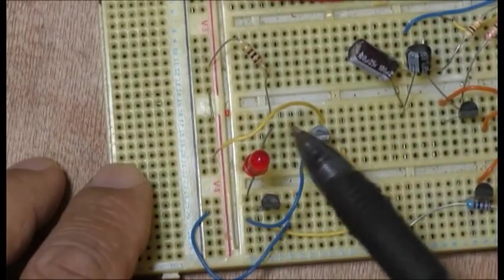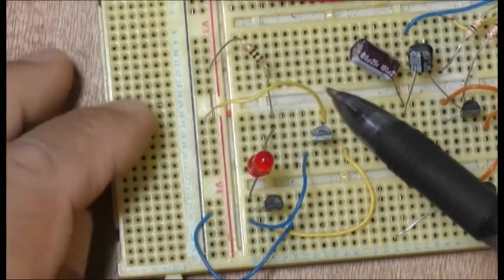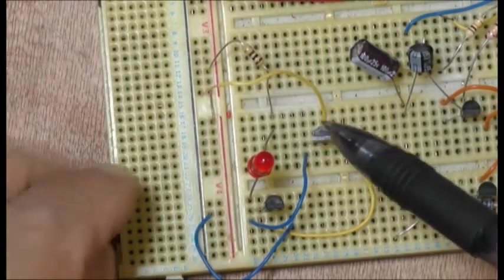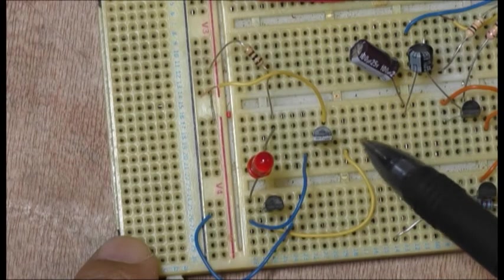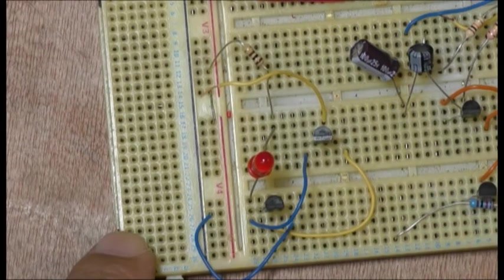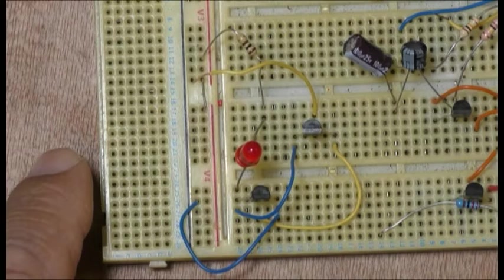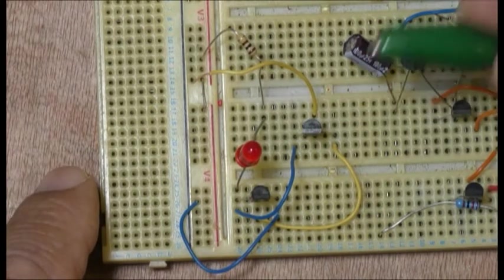So here we go. That's the collector connected and the 100 ohm resistor connected to the positive. This is the lead coming out from the base of this one. The base of this one is going to the emitter of that one. Let's have a look. So this is nine volts I'm putting in.